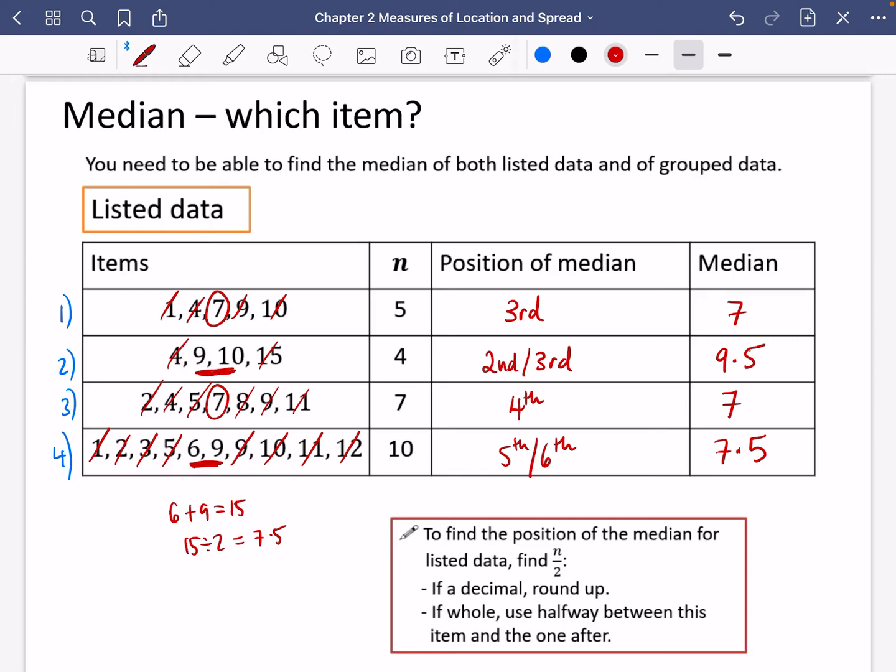So what is the rule? The rule is to find the position of the median for listed data, find n divided by two. If it's a decimal, you round it up. If it's a whole number, you go halfway between this item and the one after. So let's just check that that works.